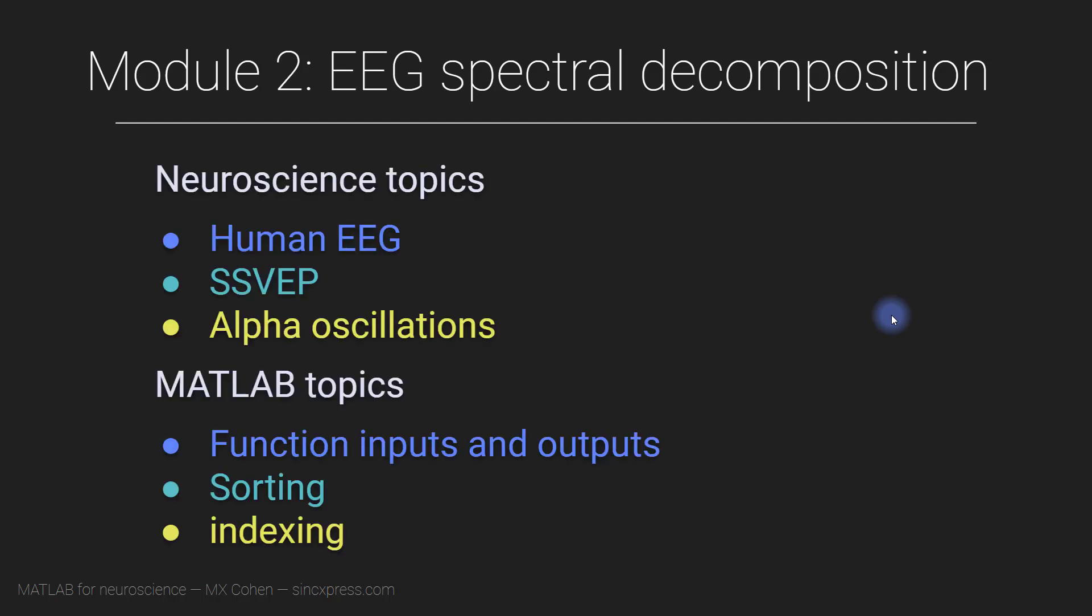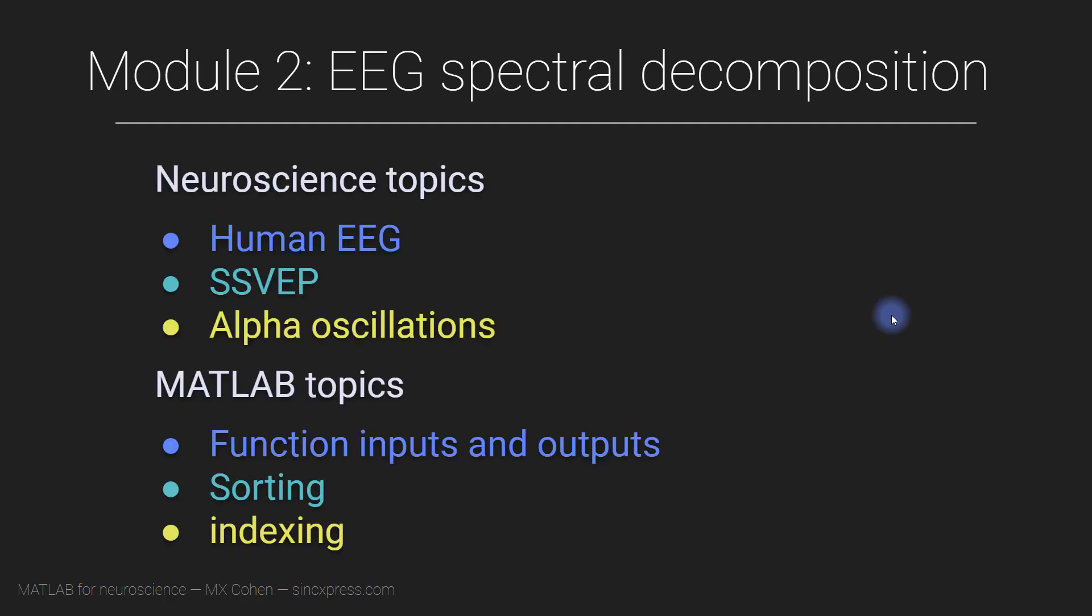In particular, we are going to look at human EEG data, and we'll be doing some spectral analyses or frequency analyses focusing on the SSVEP and on alpha oscillations.